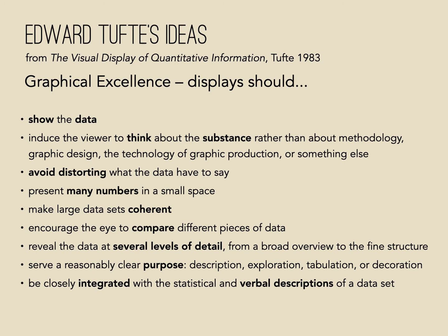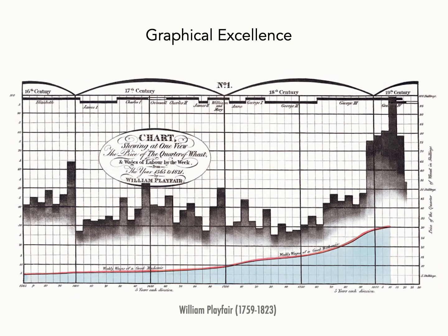Let's look at a beautiful example of graphical excellence. This is a very often shown graphic from William Playfair, who has many beautiful examples from the 18th century. It shows a time series and includes a bar graph, a line graph, beautiful fill, and watercolor on the histogram. Look carefully at the top — it even includes the reigns of different monarchs over time. They're trying to show the price of wheat compared with a lot of other things going on in society at the same time. Please pause the video and look on your own — this is a beautiful example of graphical excellence.